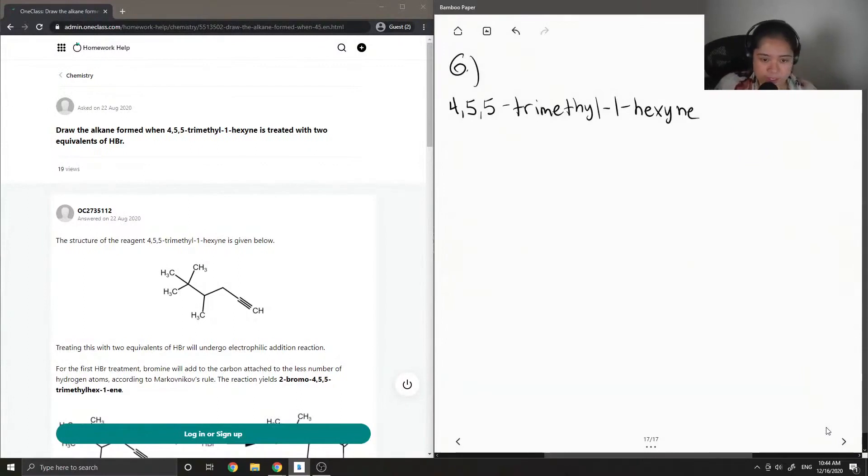First, we're interested in the parent chain. In our case, it is a 6-carbon chain, and we know that because it has hexyne as the base. So let's draw a 6-carbon long chain. And let's number them. So we have, let's start from here, 1, 2, 3, 4, 5, 6.